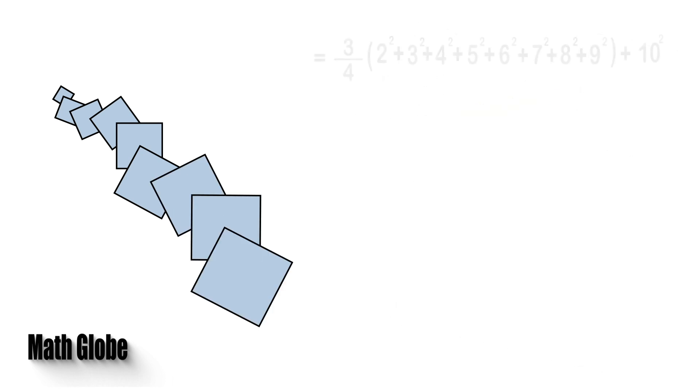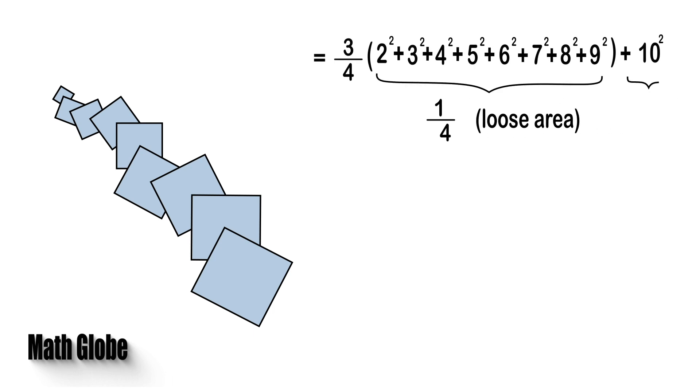Except the last square at the bottom, we know that all other squares lose one fourth of their areas due to overlaps, so we can formulate the total area of the shape as follows.